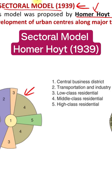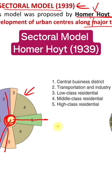The sectoral model analyzes the internal structure of cities. It takes into account the movement of people along transportation lines from the center of the city — that is, from the central business district. People move out along these lines, and development such as housing and other infrastructure develops along these transportation routes. This is where the sectors are created.